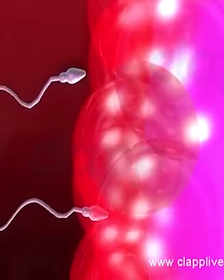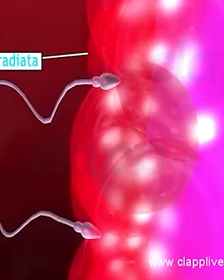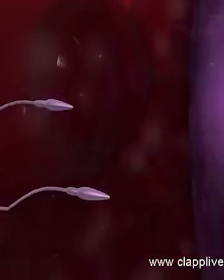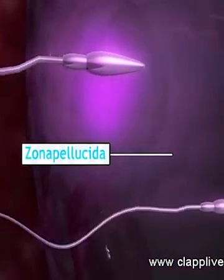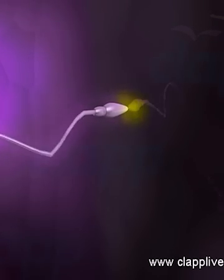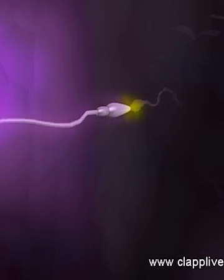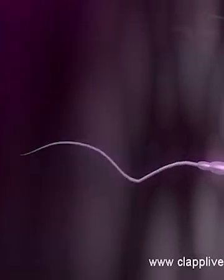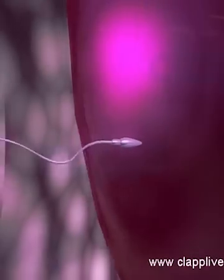The sperm passes through the egg membrane, corona radiata, and reaches the zona pellucida. The acrosome in the sperm head breaks and releases hyaluronidase enzyme along with other enzymes called lysins. These enzymes dissolve the egg envelopes and clear a path for sperm entry. The plasma membrane of the sperm then fuses with the plasma membrane of the ovum.